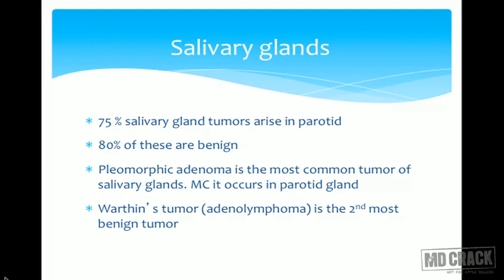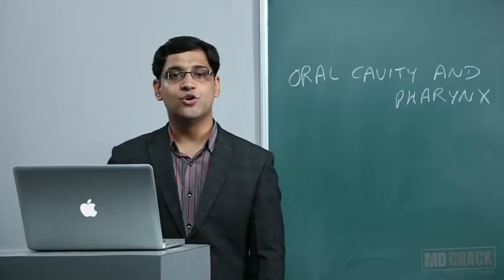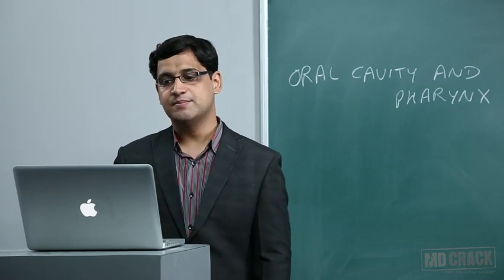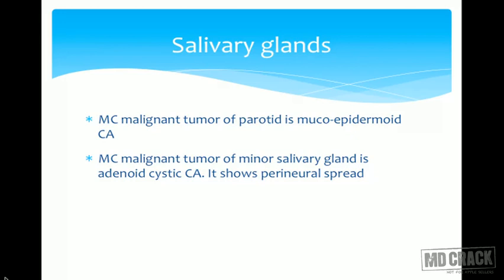The second most common benign tumor of the salivary gland is Warthin's tumor, also known as adenolymphoma. The most common malignant tumor of the parotid is mucoepidermoid carcinoma. The most common malignant tumor of the minor salivary glands is adenoid cystic carcinoma, which shows perineural spread. Remember: parotid is a major salivary gland.